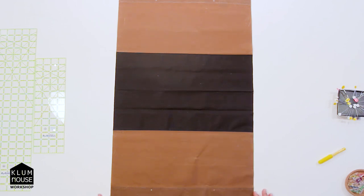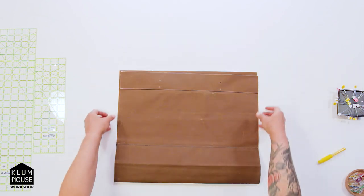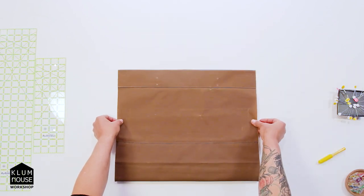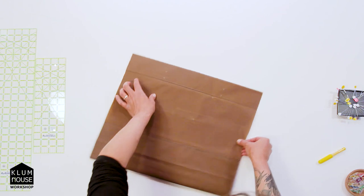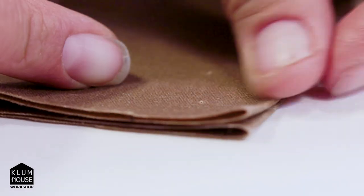The first thing that we're going to do is fold it so it's right sides together with the top of the tote lined up up here. So we're lining up the top of the tote here, so we lined those up.